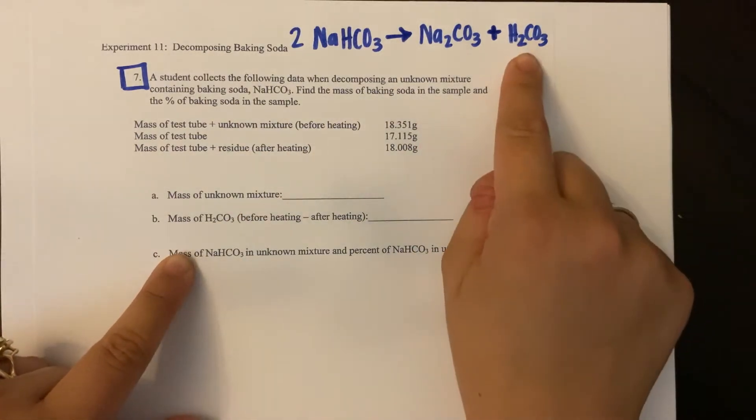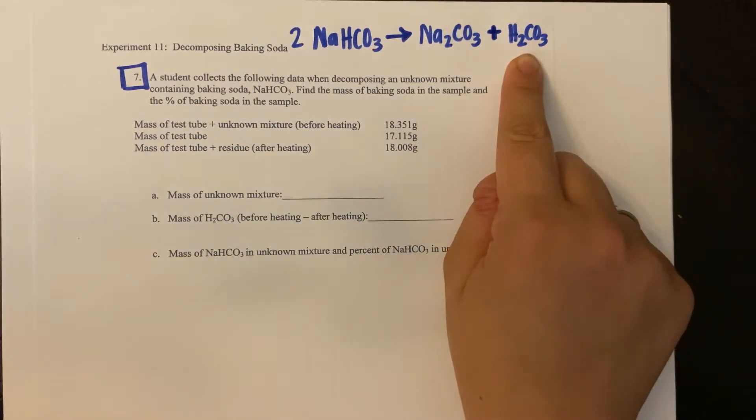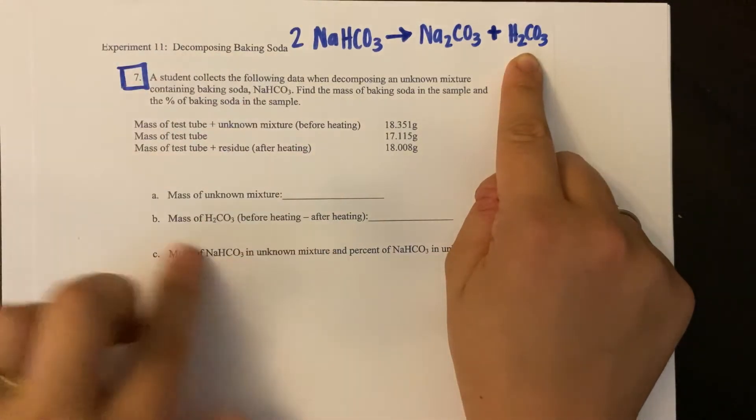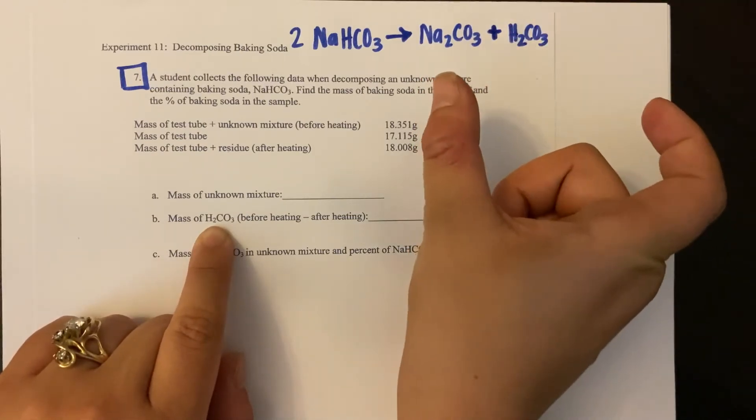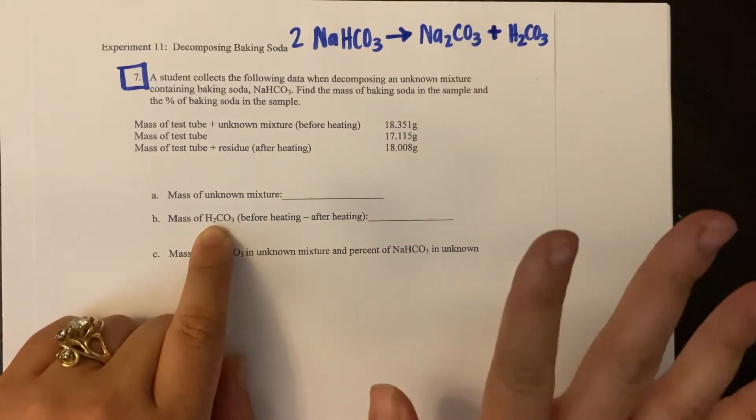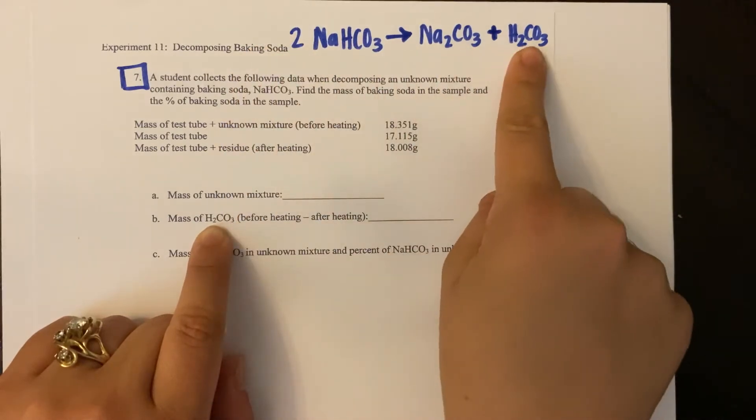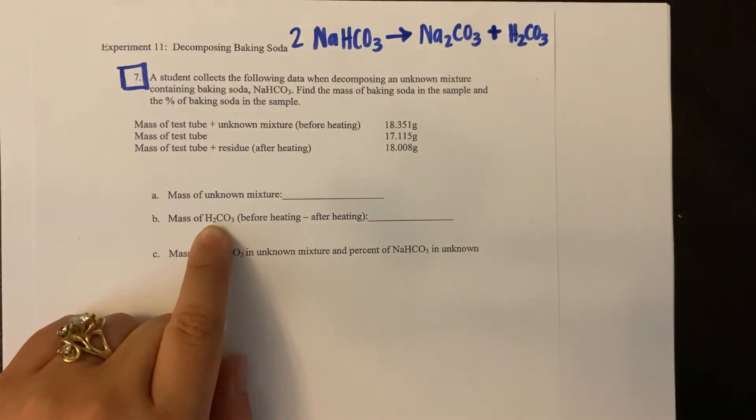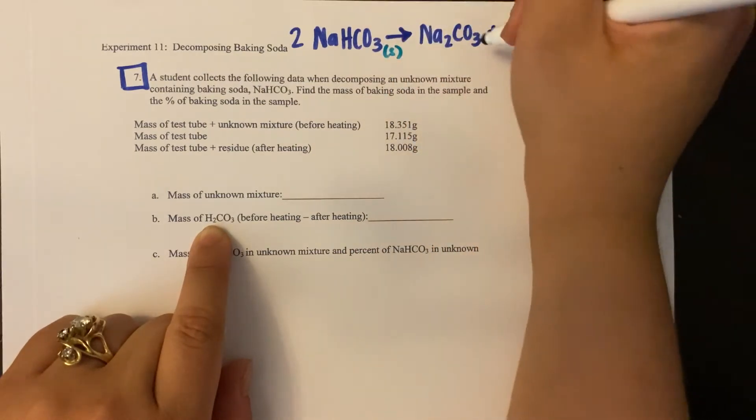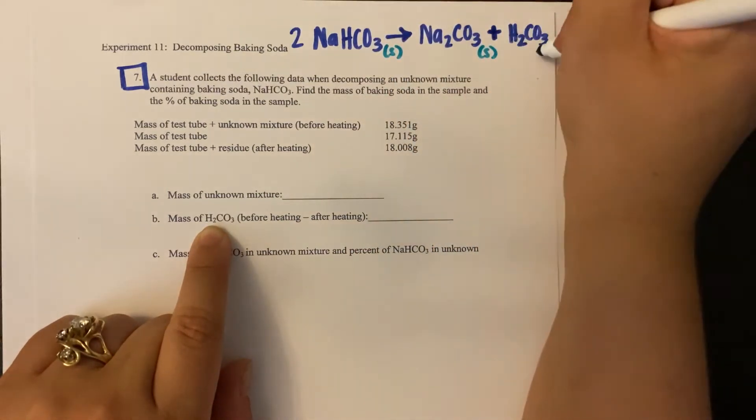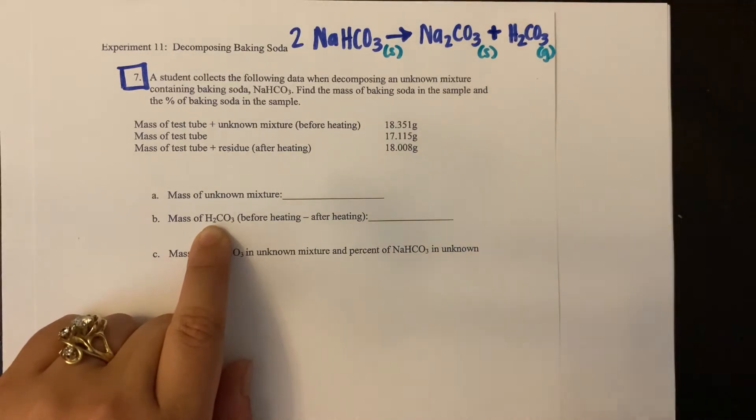Now, technically, your carbonic acid breaks down even further. It breaks down into water and carbon dioxide. Who cares for the purposes of this, we're just going to be using those two together as carbonic acid because it's easier. But here's your balanced equation, and then what I would also do is go through and say, this is a solid, this is a solid, and this is a gas.